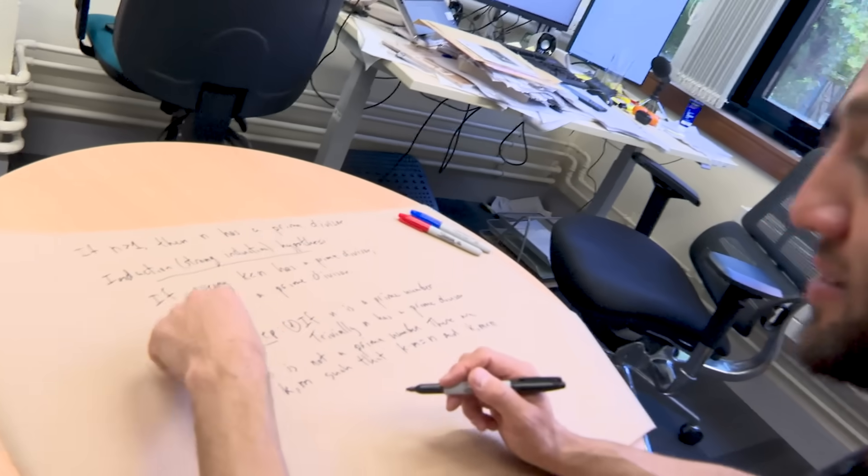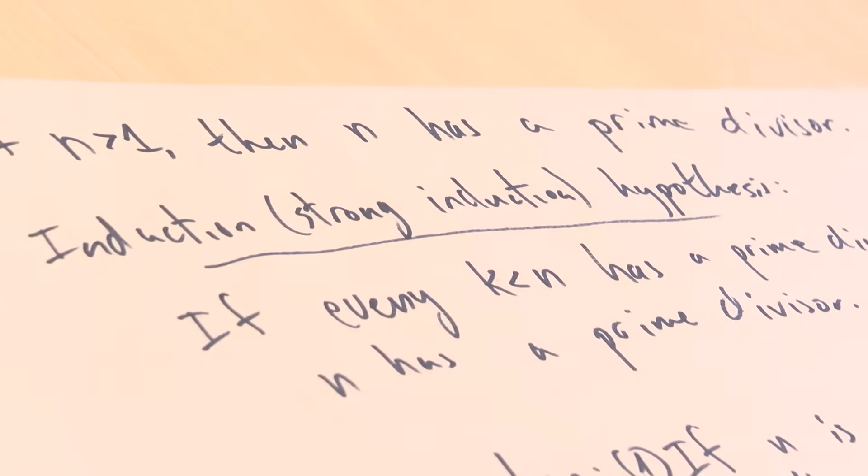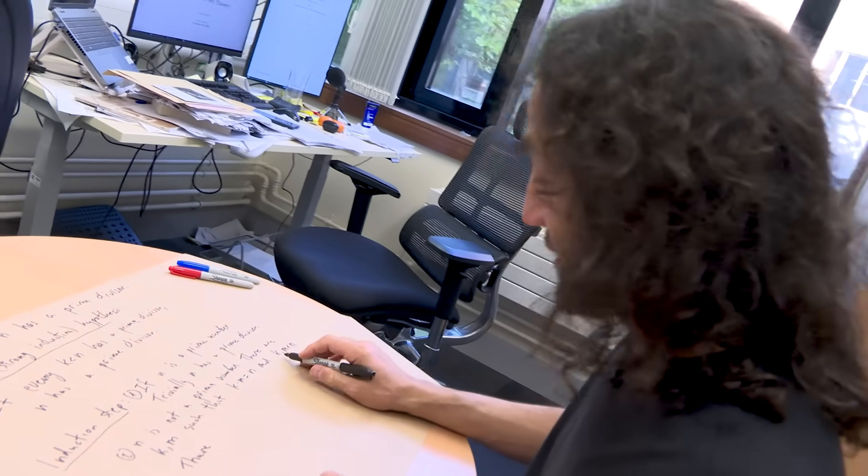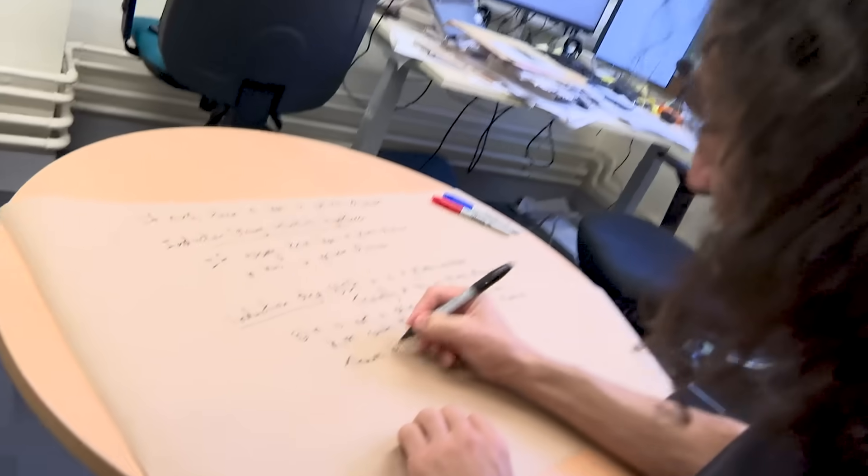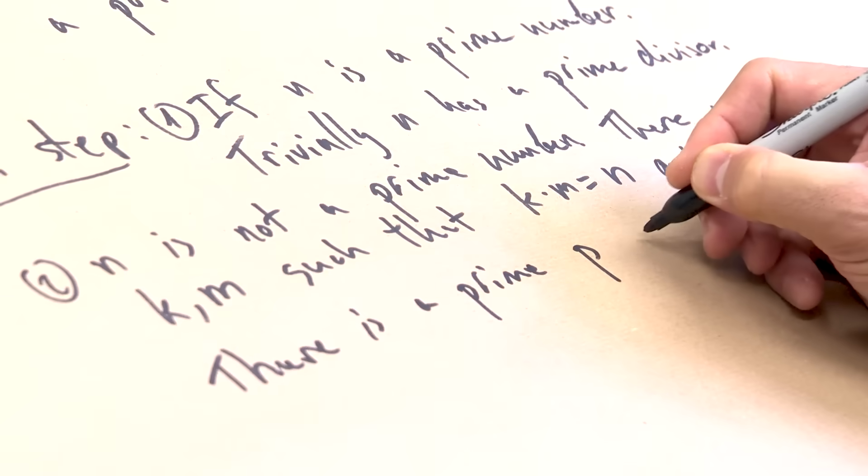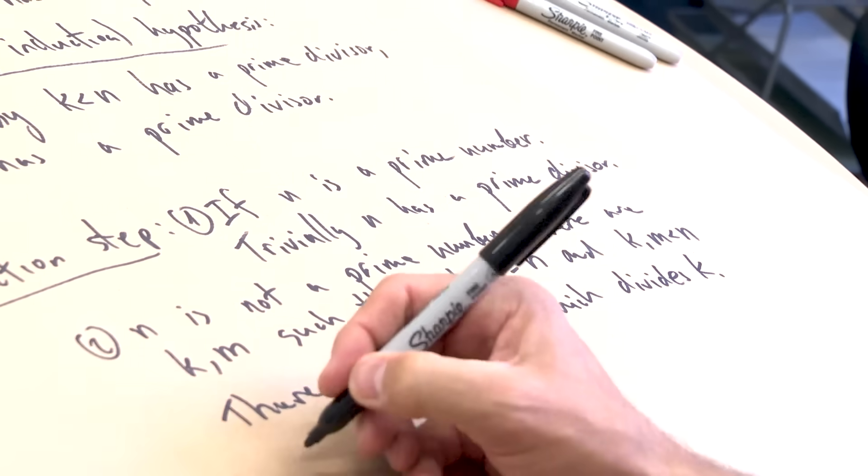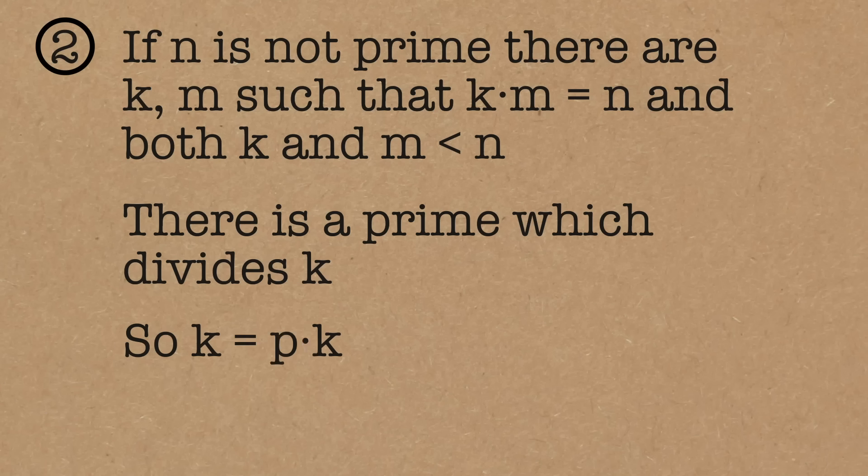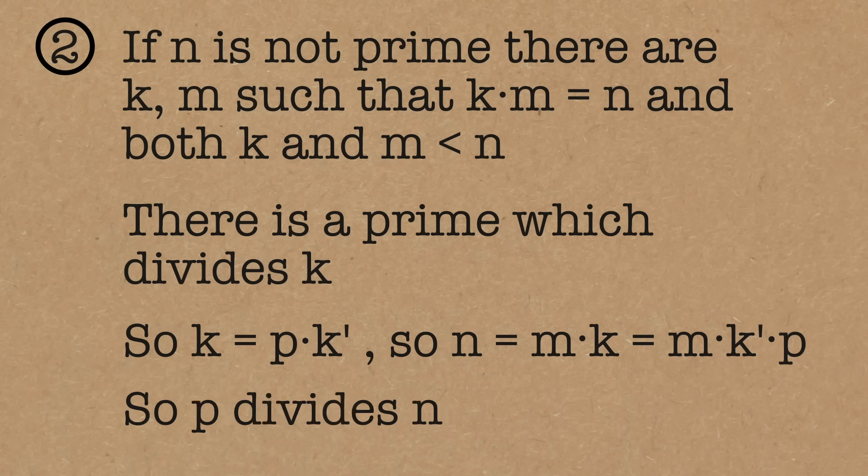Now, look at the induction hypothesis. So, all the numbers before. Exactly. In particular, k, which is a smaller number. So, there is a prime p which divides k, right? So, k equals p times k prime. But that means n is m times k, which is m times k prime times p. So, now p is a divisor of n. So, we found a prime divisor.